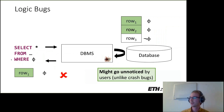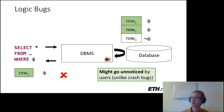We argue that finding logic bugs is a difficult challenge because they might go unnoticed by users and also by developers of database management systems. This is unlike crash bugs, for example, where a user gets immediate feedback because the process ends with a non-zero exit code.